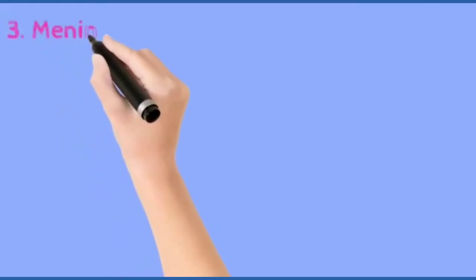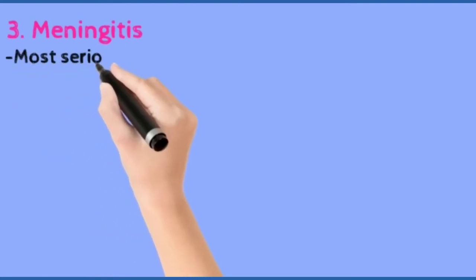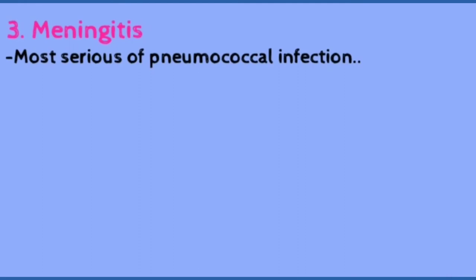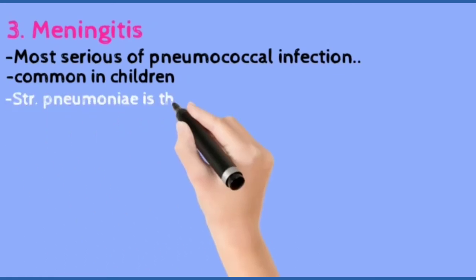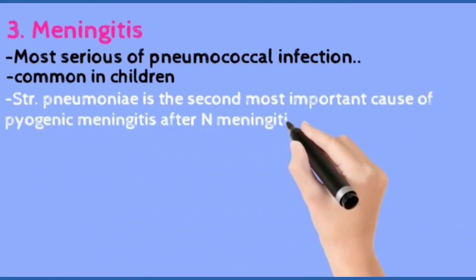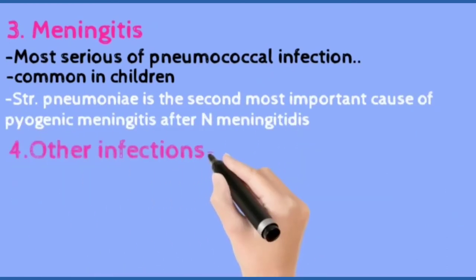Now about meningitis. This is the most serious pneumococcal infection. Meningitis is very common in children. Streptococcus pneumoniae is the second most important cause of pyogenic meningitis after H. influenzae meningitis.